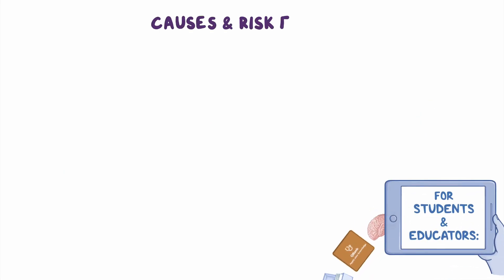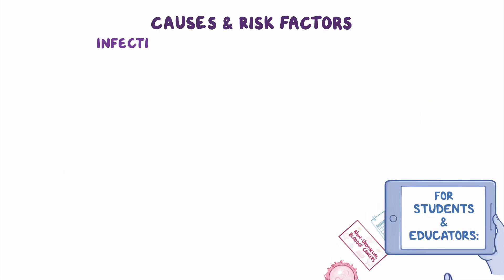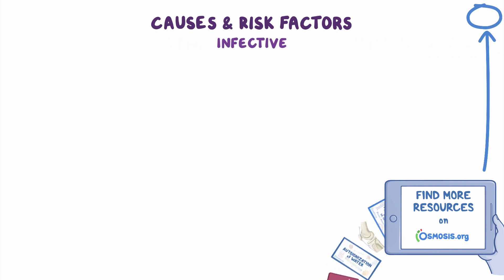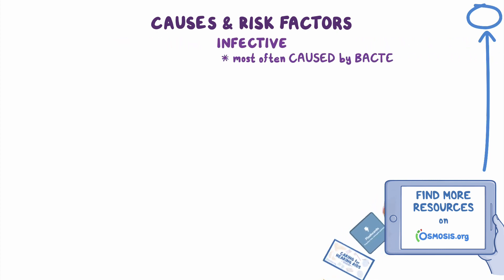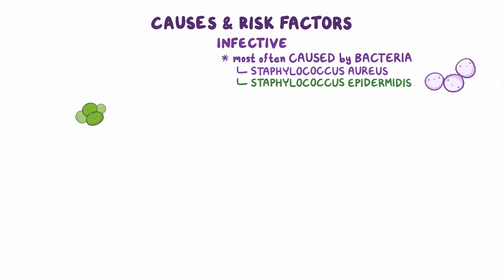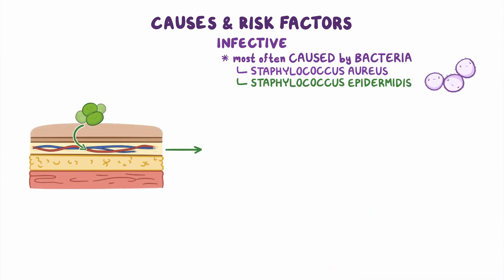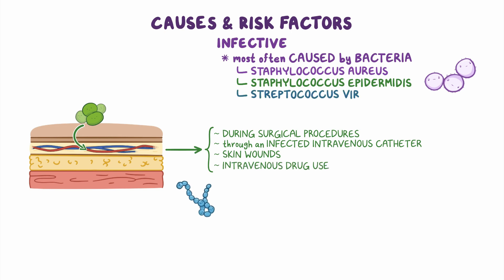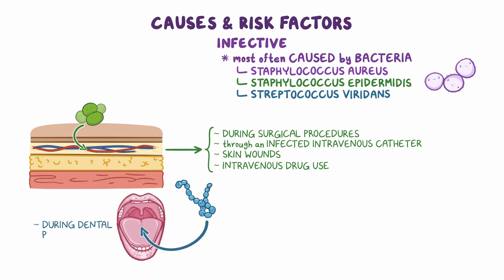Depending on its cause, endocarditis can either be infective or, less frequently, non-infective. Infective endocarditis is most often caused by bacteria like Staphylococcus aureus or Staphylococcus epidermidis, which can be found in the skin and may enter the bloodstream during surgical procedures or through an infected intravenous catheter, skin wounds, or intravenous drug use. Another common bacterial cause is Streptococcus viridans, which can be found in the mouth and may enter the bloodstream during a dental procedure.